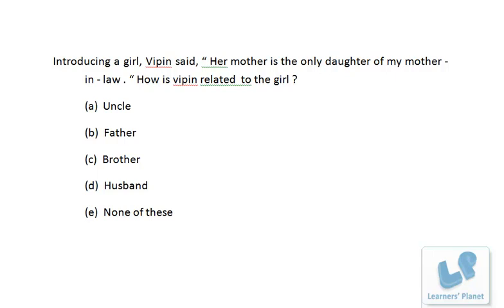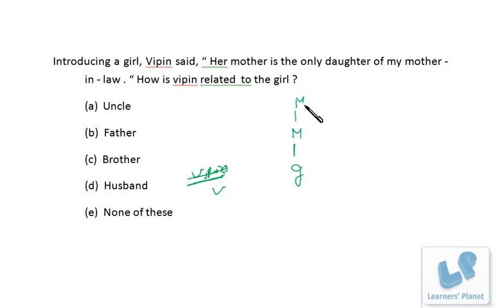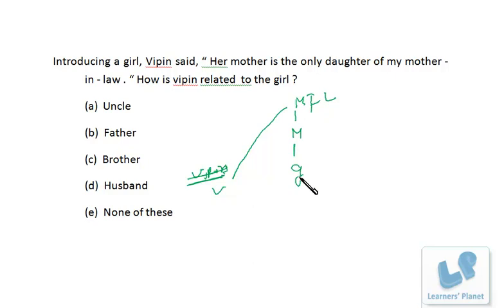Here we have a girl — write G for girl — and the person, let's call him V. The girl's mother is the daughter of V's mother-in-law. So V's mother-in-law's daughter is V's wife. That means the girl's mother is V's wife, making V the girl's father. If you draw the family tree you can solve the problem in seconds.